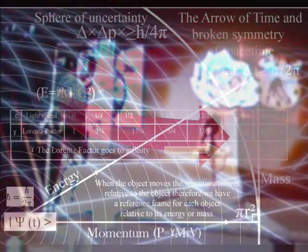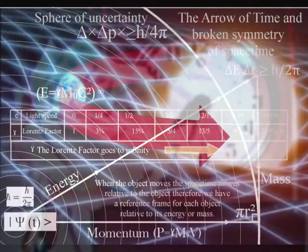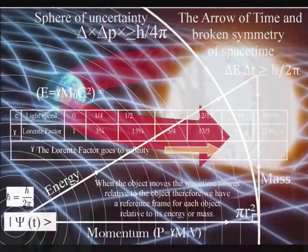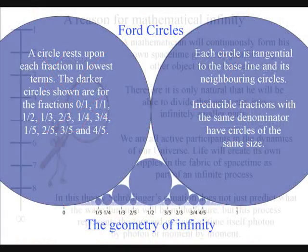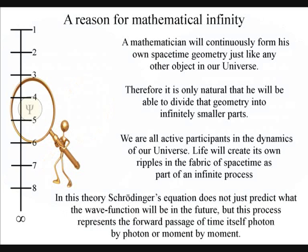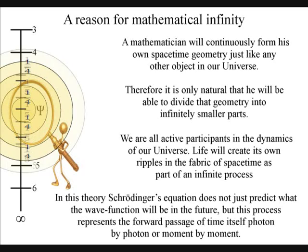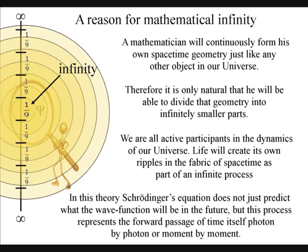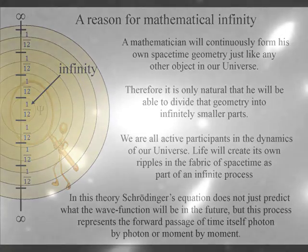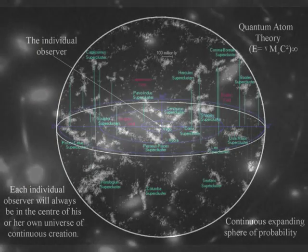This theory can explain the paradoxes of infinity because we have a process of continuous creation that we see and feel as time but has the geometry of space-time. A mathematician will interact with this universal process continuously forming his or her own space-time geometry. Therefore it is only logical that he will be able to divide that geometry into infinitely smaller parts as time unfolds. The universe is dynamic and expanding, and this forms the infinities of human mathematics.